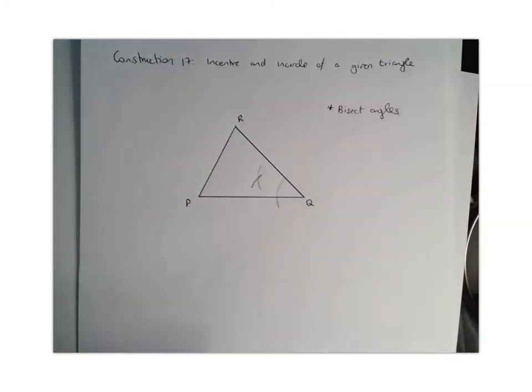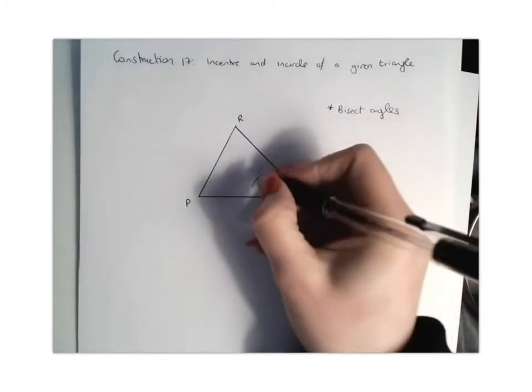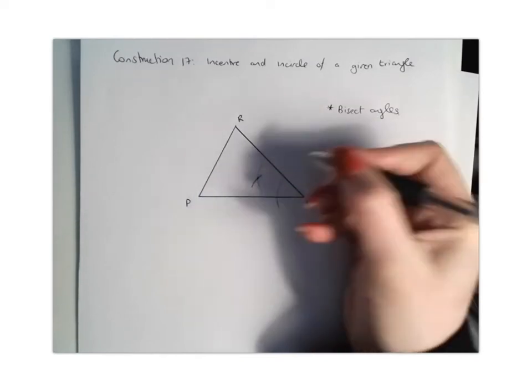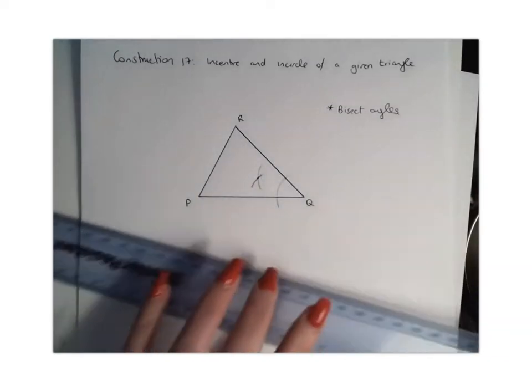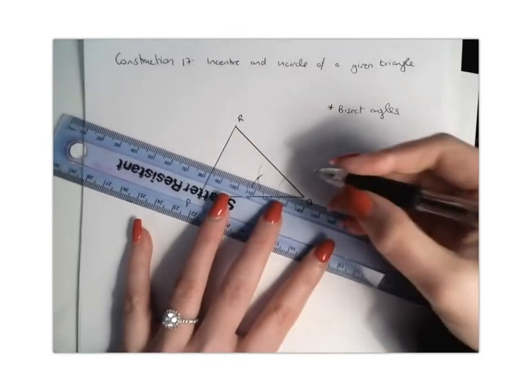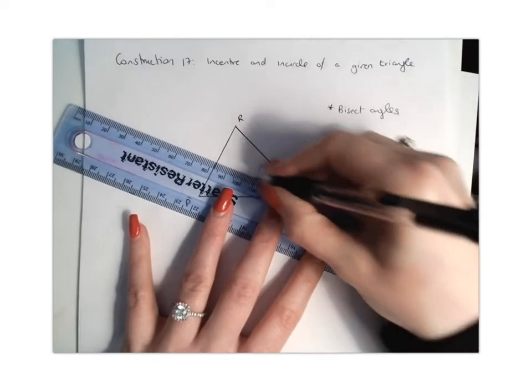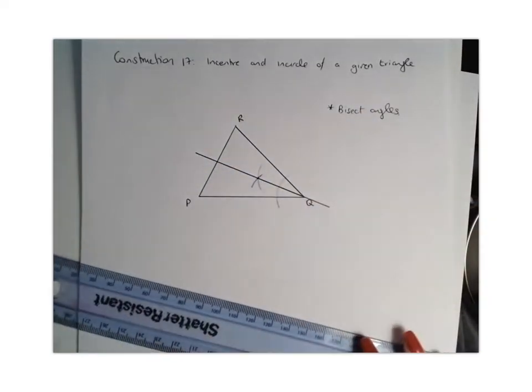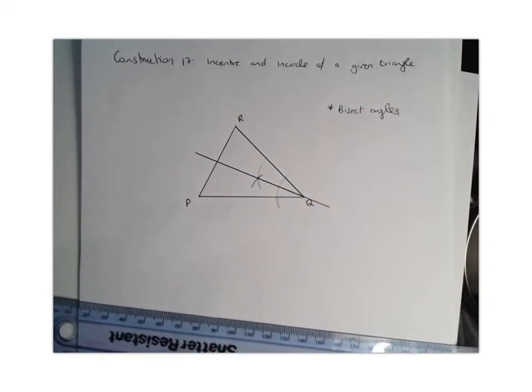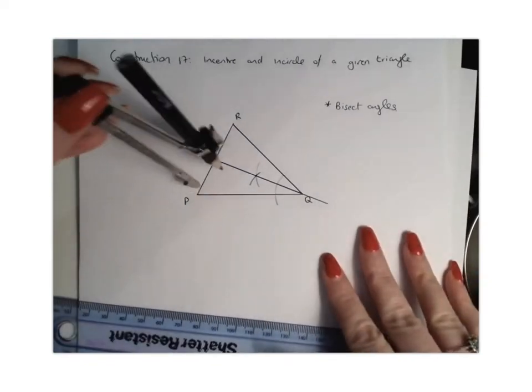Okay, so that's your first point of intersection. So you're going to label that there and you're going to join that point with Q. Okay, then we're going to go and do the same process to another side of your triangle. So I'm going to do it on point P.